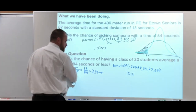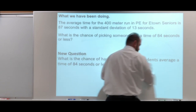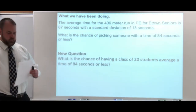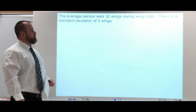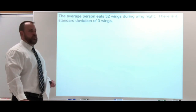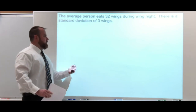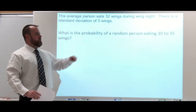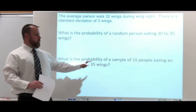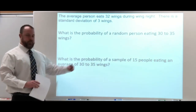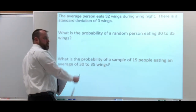Let's look at another example. The average person eats 32 wings during wing night, with a standard deviation of three wings. We're assuming this is a normal distribution, so we can use the central limit theorem if we need to. What's the probability of a random person eating 30 to 35 wings? And then we'll also look at what's the probability of a sample of 15 people eating an average of 30 to 35 wings. It's important to identify whether we're looking at one person or a sample.